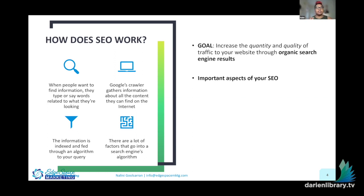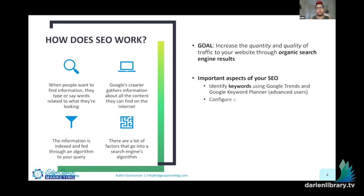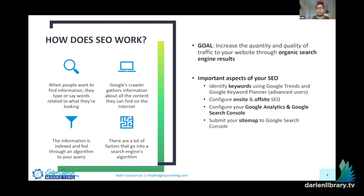If you want to check out last week's class, that's where we talked about all the different ranking factors. At a high level, the aspects of your SEO to keep in mind are: are you identifying your keywords using Google Trends, or if you're an advanced user, Google Keyword Planner. You want to configure your on-site and off-site SEO — this is where the technicalities of your ranking factors come in. Today we're going to talk about configuring Google Analytics, Google Search Console, submitting your sitemap, and setting up your Google My Business.